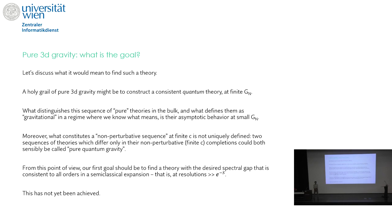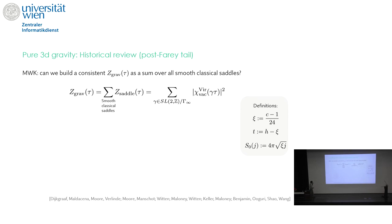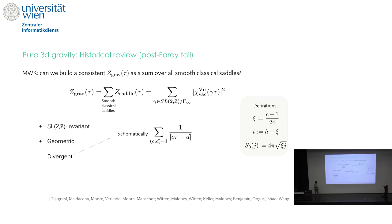The question is whether there exists a consistent partition function Z_grav without off-shell configurations, and if so, which CFT problem it is solving. The central calculation in this area is the Maloney–Witten–Keller (MWK) result: the sum over smooth classical saddles — thermal AdS and its SL(2,Z) modular images — gives an SL(2,Z)-invariant partition function with the geometric character we'd want. But it has issues: it's divergent, governed by a schematically divergent sum that was regularized in their paper; and it has a negative density of states.